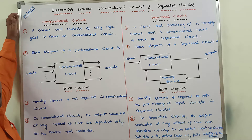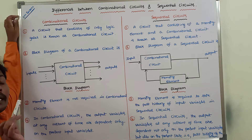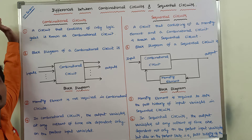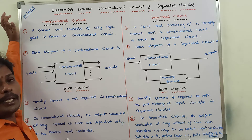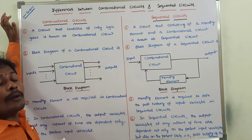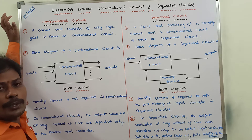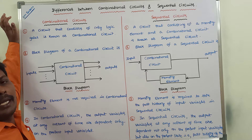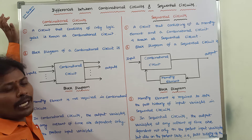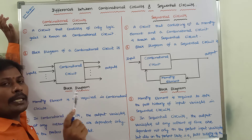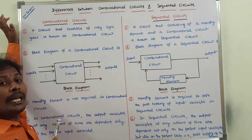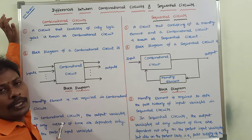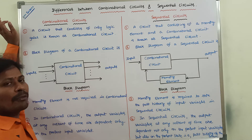Now we can go for the differences. First one: a circuit that consists of only logic gates is known as combinational circuits. In the case of sequential circuits, in addition to the logic gates, we are also adding some memory element. A circuit consisting of a memory element and a combinational circuit is called a sequential circuit.